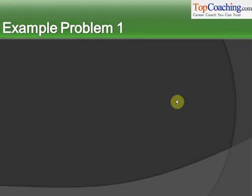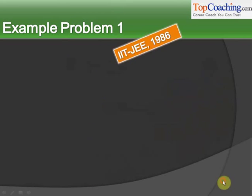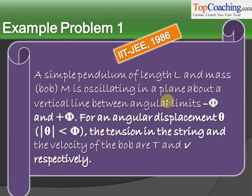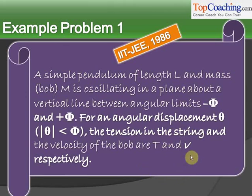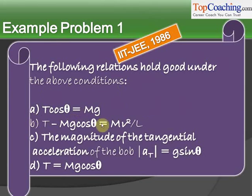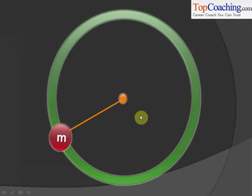Let's solve a problem to clarify this concept in an even better way. This one was asked in IIT JEE 1986. A simple pendulum of length l and mass m is oscillating in a plane about a vertical line between angular limits minus phi and plus phi. For an angular displacement theta, where the modulus of theta is less than phi, the tension in the string and the velocity of the bob are T and v respectively. The following relations hold good under these conditions.